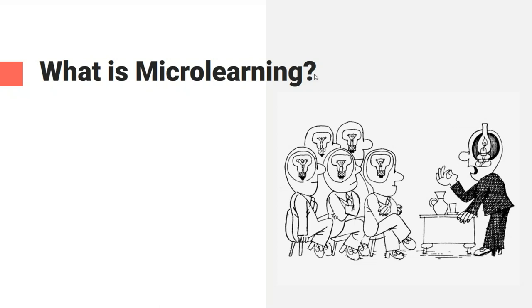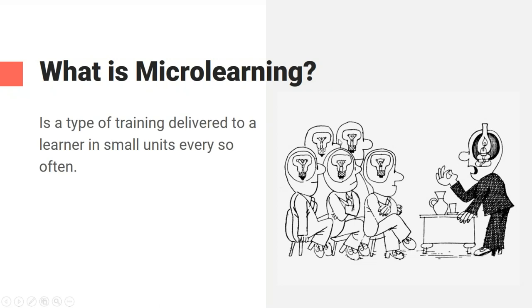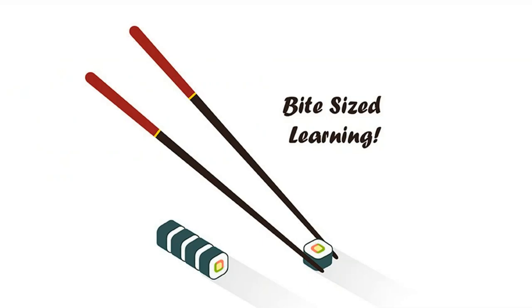So, what is microlearning? Microlearning is a type of training delivered to a learner in small units or chunks every so often. It consists of microlearning courses or lessons — it doesn't matter what we call them. Each lesson or microlearning course equals one skill. That's why microlearning is also called bite-size learning.